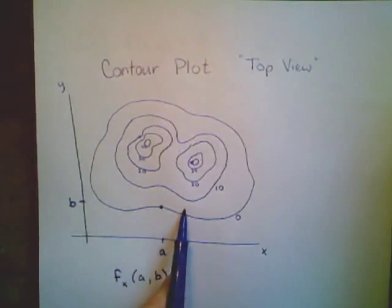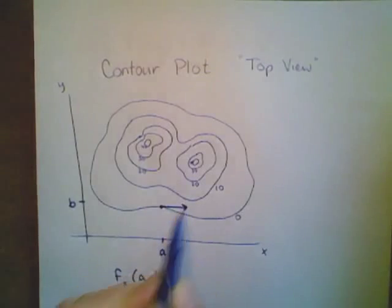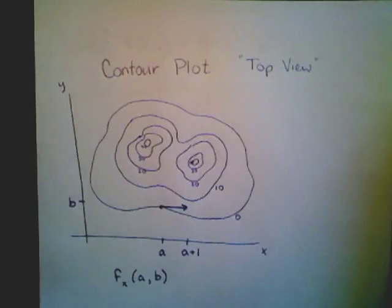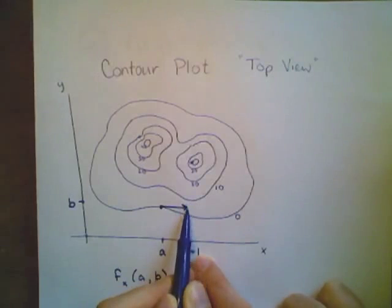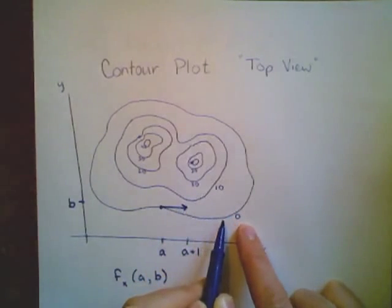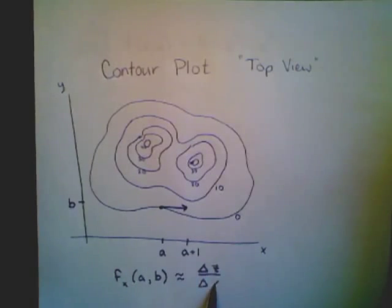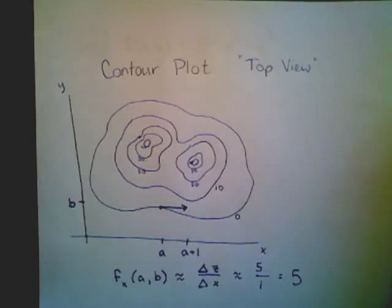That's asking: what's my rate of change in the x direction holding y constant at b? Holding y constant at b and moving one unit in the x direction to a plus one, how high am I going up? I see that if I move one unit in the x direction, I'm going up about five units in the z direction, because I'm between the level curve where z equals zero and the level curve where z equals 10. So my partial derivative with respect to x is approximated by the rate of change in z divided by the rate of change in x, which is approximately five over one, which is five.